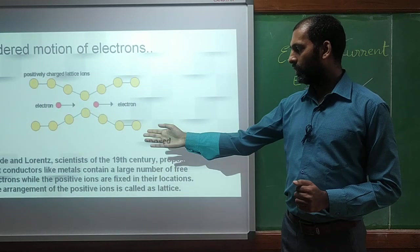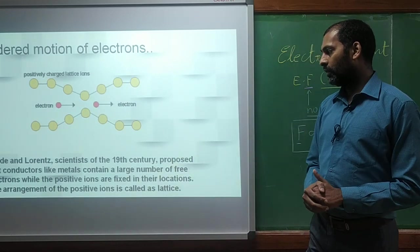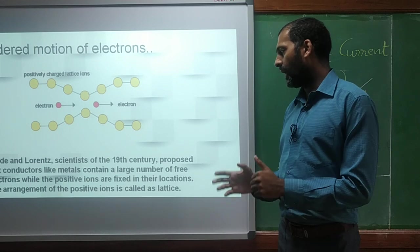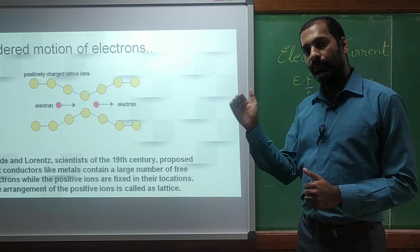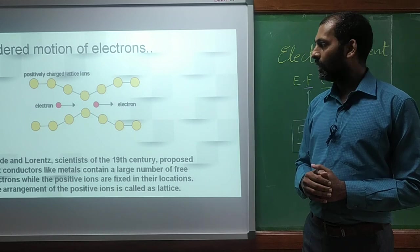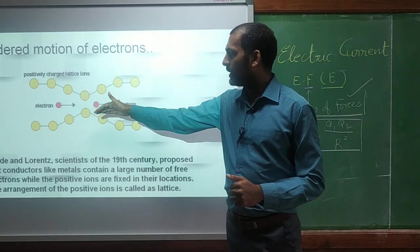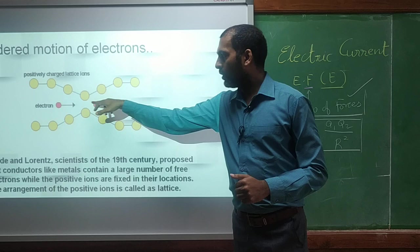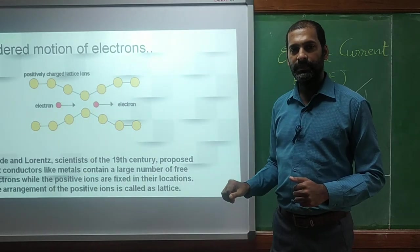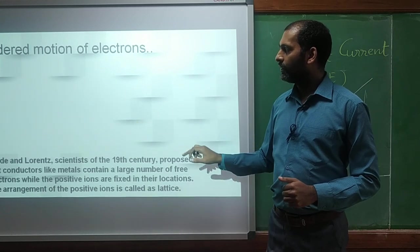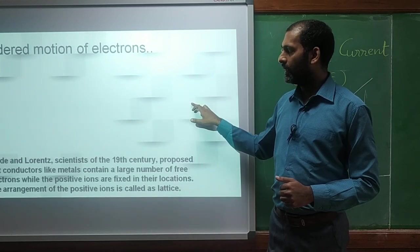There are two scientists, Drude and Lorentz. They propose that conductors like metals have large number of free electrons. And they move among the positive remaining ions. So when there are positively charged lattice ions, electrons get repelled. They don't go and attach to them. They move in the direction of the remaining passage.